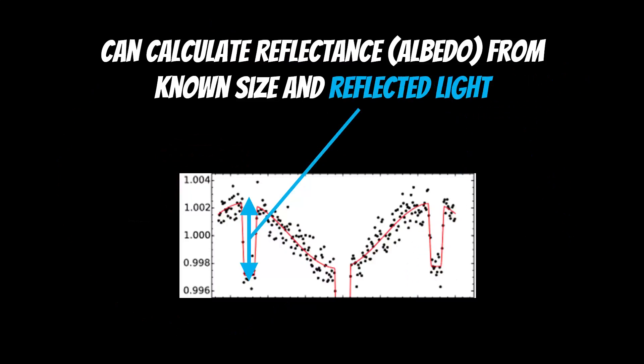What you can do then is if you already know the size of the planet, and you measure how much light is being reflected by the planet, additional light, then you can work out its reflectance or the albedo. That is how much light is reflected from an object. For example, something like the Earth, when it was during an ice age, is going to reflect a lot of light, it's going to have a very high albedo. An object or planet like this one, which is very dark, is going to have a very low albedo. So it's reflecting a lot less light.